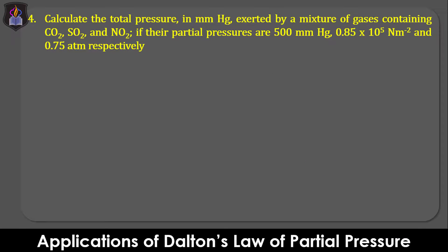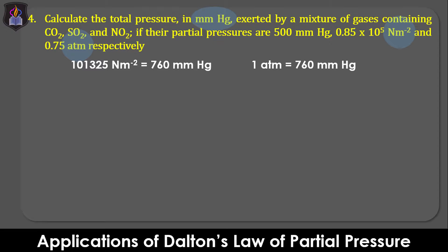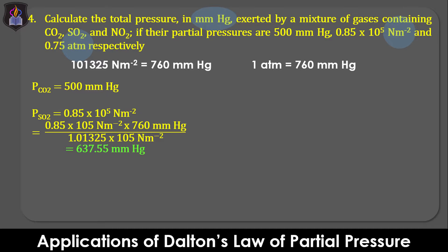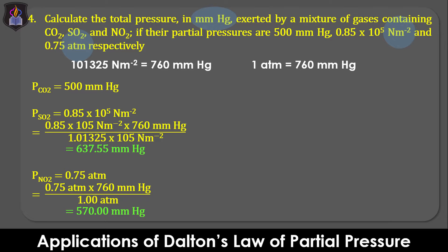Question 4: Calculate the total pressure in mmHg exerted by a mixture of gases containing CO₂, SO₂, and NO₂, if their partial pressures are 500 mmHg, 0.85 × 10⁵ N/m², and 0.75 atm respectively. This is a tricky question testing knowledge of interconversion of different units of pressure. Since the answer must be in mmHg, we convert: partial pressure of CO₂ is 500 mmHg; partial pressure of SO₂ is 0.85 × 10⁵ N/m² = 637.55 mmHg; and partial pressure of NO₂ is 0.75 atm = 570 mmHg.